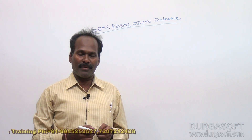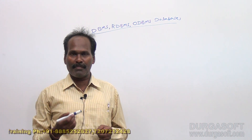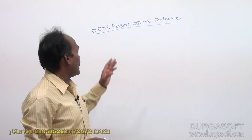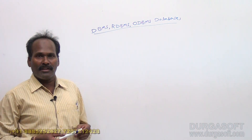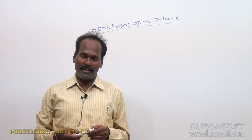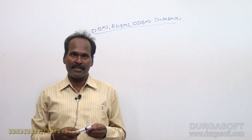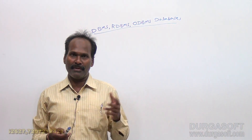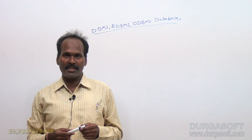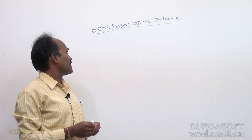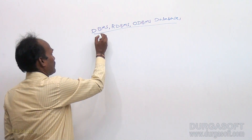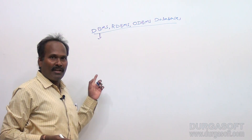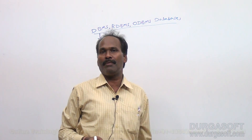DBMS is going to store all the information in any format, like flat files format and XML files format. But when coming to RDBMS, data will be stored in tabular format. Strictly speaking, DBMS may or may not store information in the form of tables, but RDBMS stores information in the form of tables.